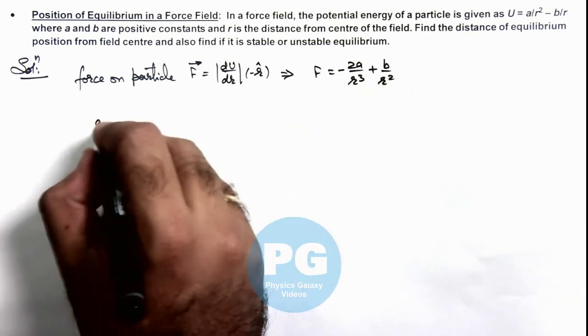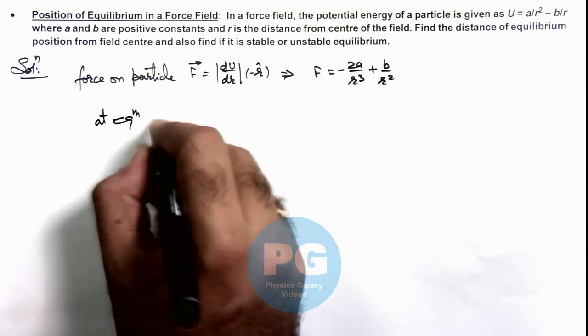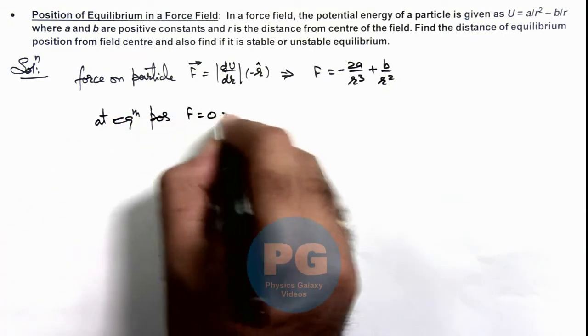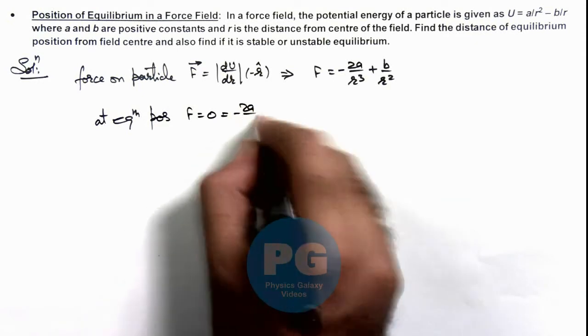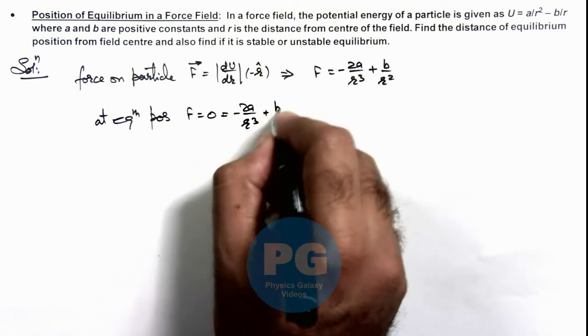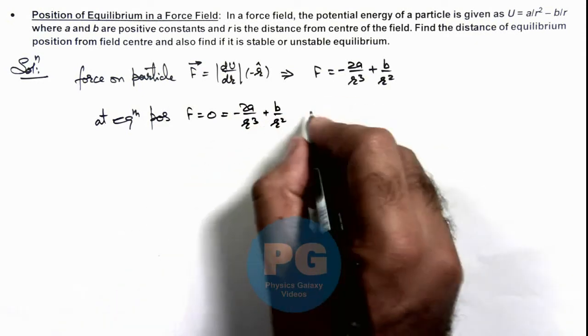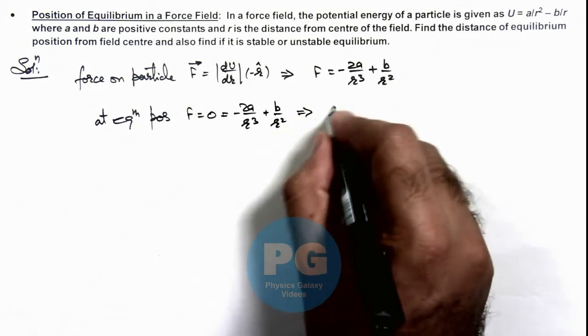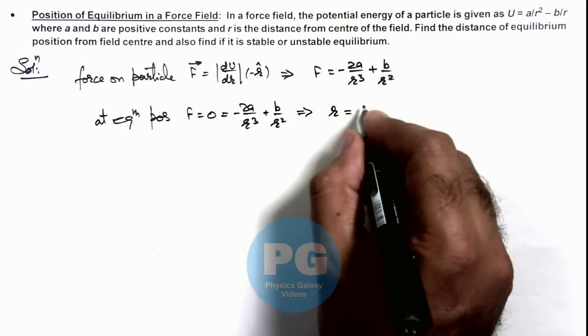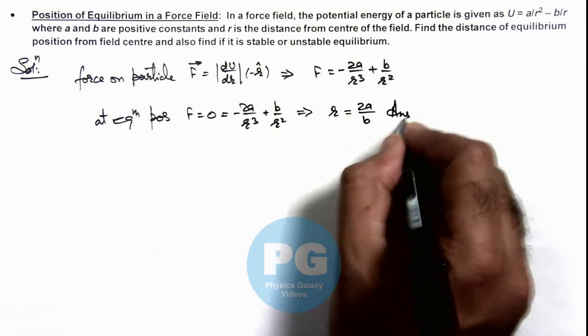At equilibrium position, the force must equal zero: -2a/r³ + b/r² = 0. On simplifying, we get the equilibrium position as r = 2a/b, which is one answer for this problem.